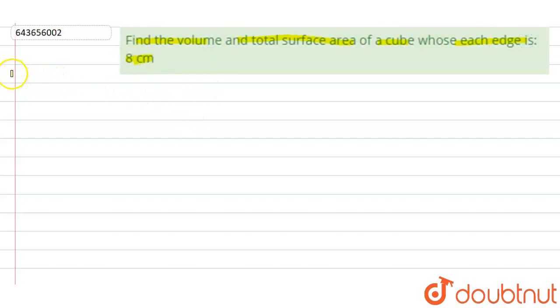In this question we have to find the volume and total surface area. Length of the side of cube is given as 8 cm.